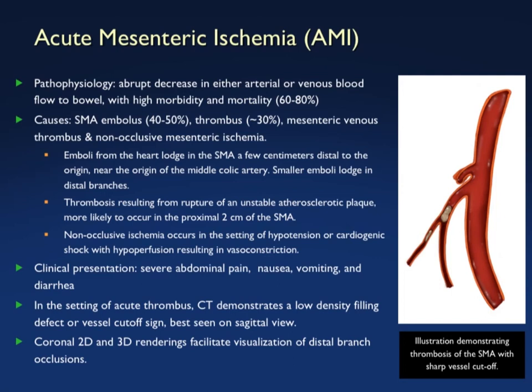Acute mesenteric ischemia is an abrupt decrease in either arterial or venous blood flow to the bowel. When undiagnosed or with delayed diagnosis, it has 100% mortality. Things we look for include SMA embolism, thrombus, and non-occlusive disease involving multiple vessels. Emboli from the heart can lodge in the SMA — not just proximally but often in the distal vessel near the middle colic artery. Thrombi often result from rupture of an unstable atherosclerotic plaque. Non-occlusive ischemia occurs in the setting of hypotension or cardiogenic shock with hypoperfusion resulting in vasoconstriction.